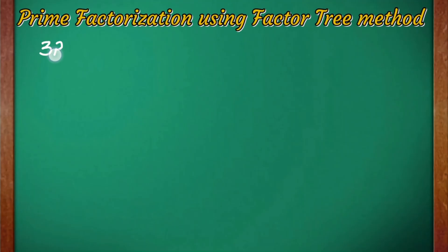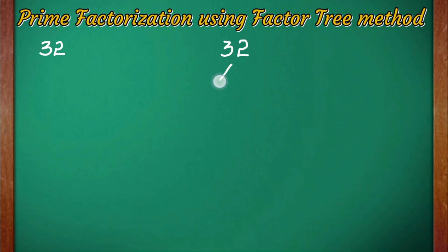Now let us take 32 as an example. First, we have to make a tree-like diagram for finding the prime factors of 32. We will write the number 32 and draw two branches from it. In these branches we will write the factors into which we are dividing 32, so the factors of 32 are 2 and 16.